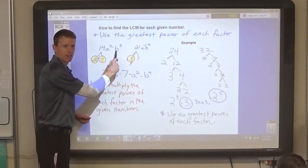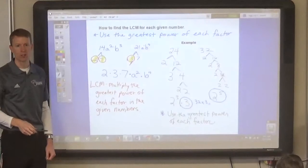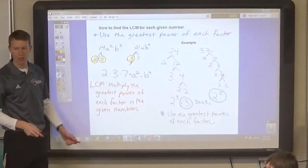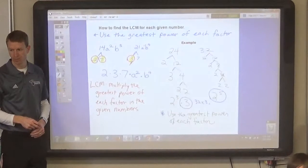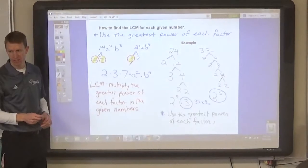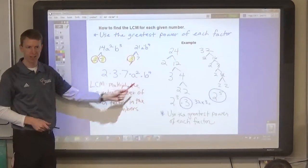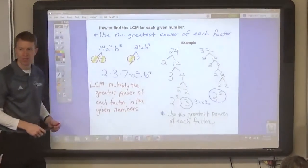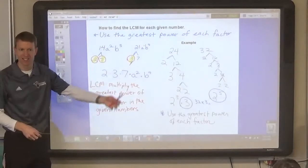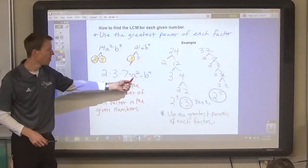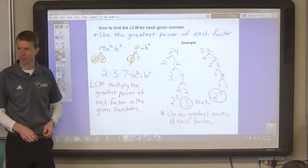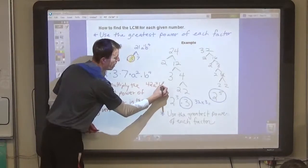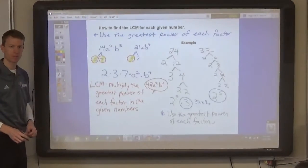And there's a b to the third power and a b to the fourth power. Which one would you use? Ariana? Would you use b to the third power or b to the fourth power in your formula? So, the greatest power, b to the fourth power. And then, you'd multiply this together. So, 2 times 3 times 7, which is 6 times 7, which is 42 times a squared times b to the fourth power. That gives us our lowest common multiple. 42 a squared b to the fourth is the answer.